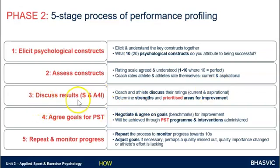The third stage is to then discuss the results. You've got two sets of scores minimum — yours and theirs. Discuss the strengths and areas for improvement. This is a really nice way to open up conversation between the athlete and the coach. Discuss the scores, discuss any differences, try to come to some agreement if they are different, and see where you're each coming from. Once you've done that, you can agree on what the athlete's strengths are and give some praise, but also identify areas that need improvement and prioritise those.